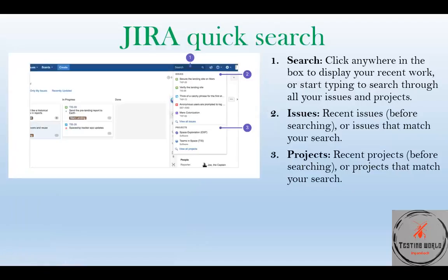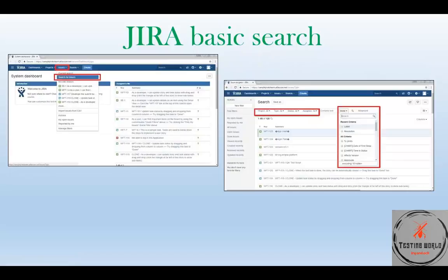Let's talk about search types in JIRA. The first and most popular is quick search — it's a search bar where when you start typing, you see a drop-down list with matching results: the first block is issue-related, the second is project-related. Another type is basic search. If you hit the issues menu item, click 'search for issues', you can select different options like project, type of issue, status, assignee and more. As mentioned, you can save your search as a filter and reuse those saved filters for frequently used search options.